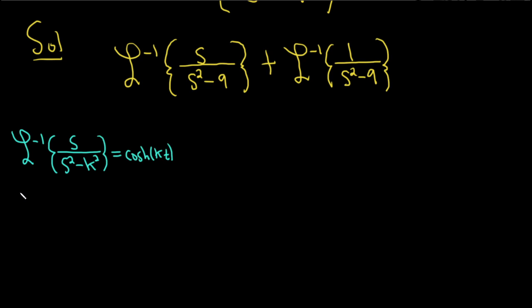And the other one tells us if we have the inverse Laplace transform of k over s squared minus k squared, that's going to be equal to the hyperbolic sine of kt.